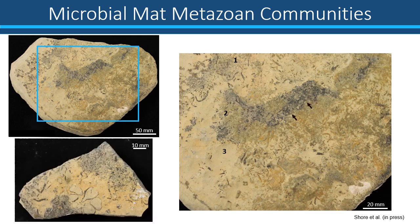Another biomineralising fauna occupies microbial mat communities at Omkik. Namacolathus form small, dense aggregations on the microbial mat itself, highlighted by the black arrows on the right-hand image. These are distinct from Cloudinomorphs due to their goblet-shaped morphology. The cup size of Namacolathus in the mats is much smaller compared to the Namacolathus that occupy the intermat areas, as seen in the image in the bottom left.